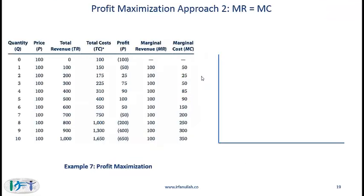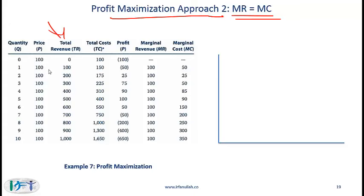Here is the second scenario: profit maximization approach 2, where marginal revenue is equal to marginal cost. To understand this, let's look at the numbers. We produce widgets and sell them. The price of each widget is 100, so this looks like a perfectly competitive market. When we produce one unit, the total revenue is 100. The cost of producing the first unit is 150, so the total cost is 150. The profit here is negative 50, the marginal revenue is 100, and the marginal cost is 50.